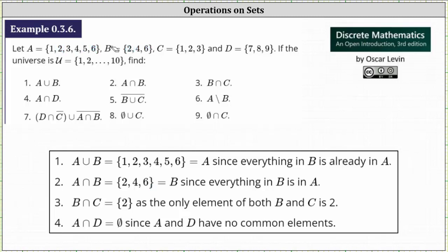Number three, we have B intersect C. This is the set containing the elements that are in set B and set C. Analyzing set B and set C, 2 is the only element that is in both set B and set C. B intersect C is the set containing the element 2.